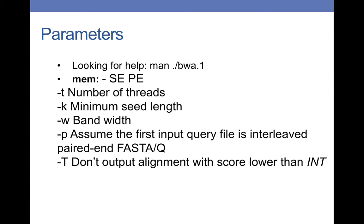Essentially, gaps longer than that number will not be found. -p assumes the first input query file is interleaved paired-end FASTA/Q. -T tells BWA to not output alignment with score lower than that threshold.